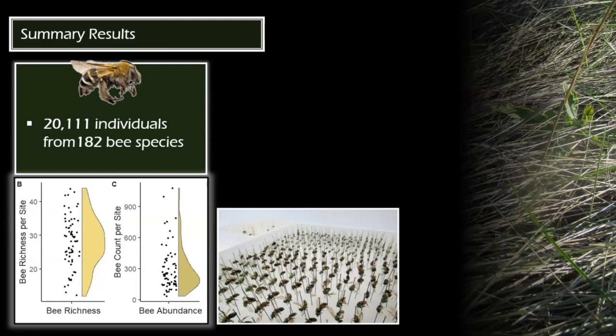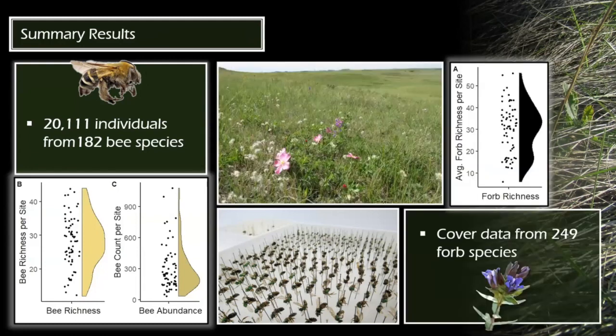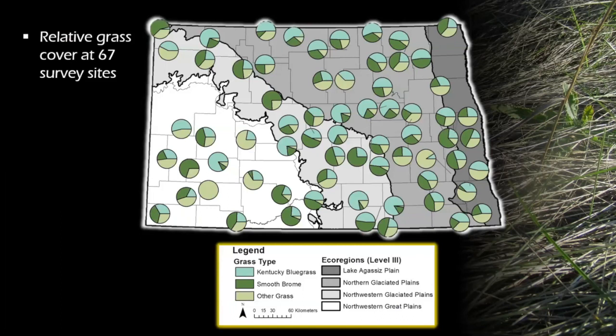For general results, I had 20,000 bee individuals from 182 species found across those 67 sites, and estimated the cover of 249 forb species. For the grass side, this is a map of relative cover of Kentucky bluegrass, smooth brome, and other grasses found on our sites. It'd be tempting to look at trends — like there's a lot of Kentucky bluegrass in the prairie pothole region — but what you can confidently say is there are a lot of exotic grasses in North Dakota.